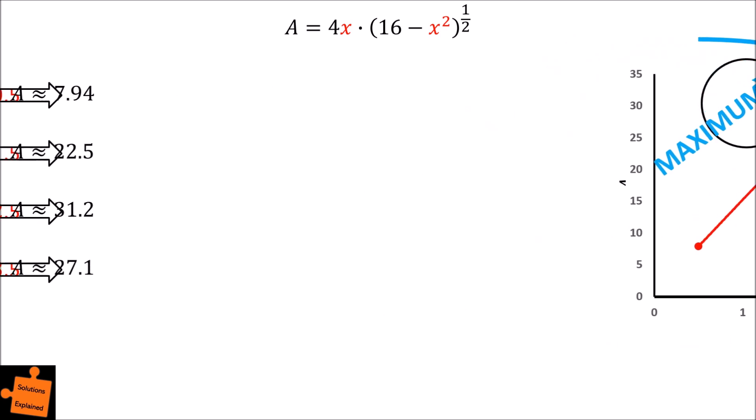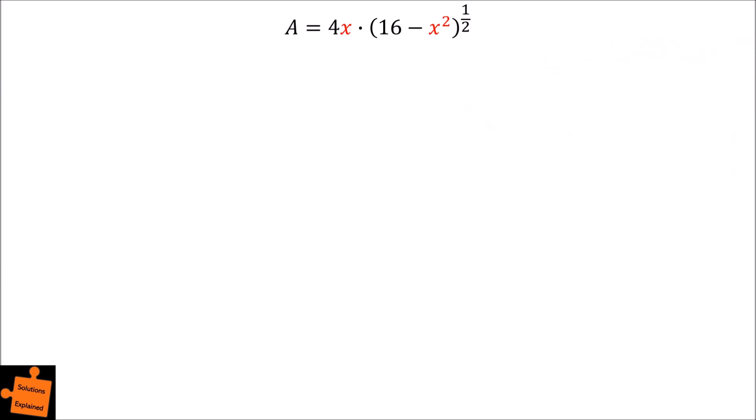To do this, we simply need to differentiate our equation. Because our function is actually the product of two separate functions, we need to use the product rule to differentiate our equation. We denote that u is equal to 4x, and v is equal to the square root of 16 minus x squared.